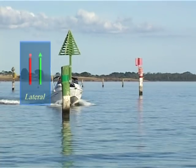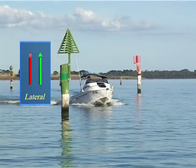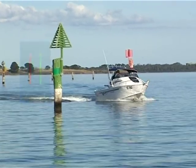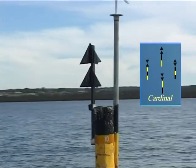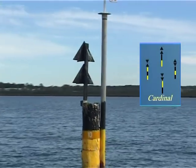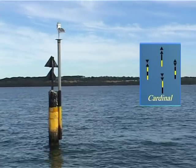The first are lateral marks, which indicate the port and starboard sides of channels. The second are cardinal marks, which indicate the safe side to pass any danger, such as rocks or a bend in the channel.